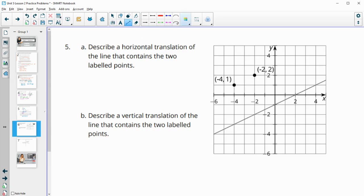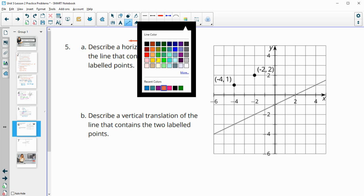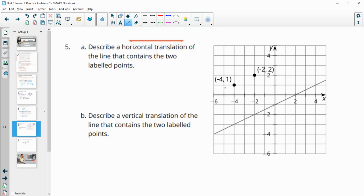Number 5, describe a horizontal translation. So remember horizontal is this way. So horizontal translation of a line that contains the two labeled points. So moving this function left or right. So we want to move it to this point. So then let's look at where there's a corresponding point that we could just move over. So we're only going to move it horizontally. So we want to take this point and move that point to the right. 1, 2, 3, 4, 5, 6, 7, 8 units. So we're going to shift right 8 units.